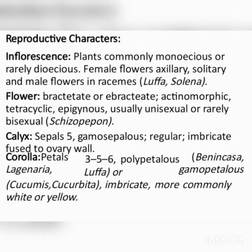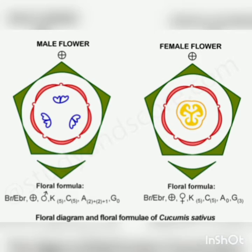Calyx: there are five sepals, gamopetalous, regular, imbricate, fused to the ovary wall. Corolla: petals are three, five, or six and those are in polypetalous condition. Petals show imbricate aestivation and more commonly exhibit white and yellow color. The picture shows the floral diagram and floral formula of Cucumis sativus.